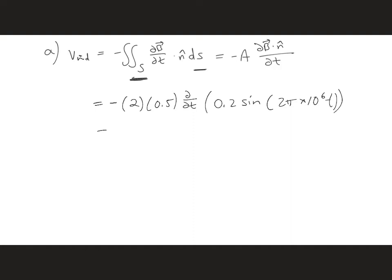Then we can take the time derivative. So we get minus 2 times 0.5 out in front still. We get 2 pi times 10 to the 6th from the time derivative times 0.2.